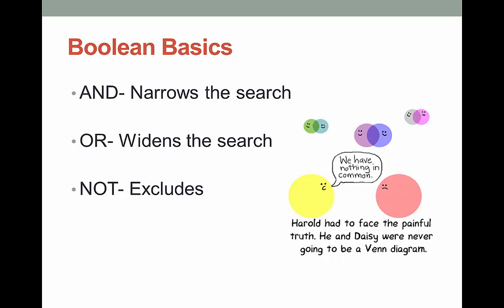When you use the AND operator, you're narrowing your search. You use AND with terms that are not similar, like libraries and dogs. When you use OR, you widen your search. This is great to use for synonyms, like cars or automobiles.